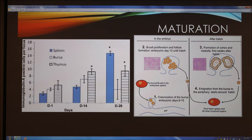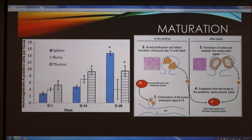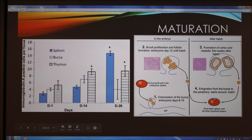The bursal follicles develop as the bursa of Fabricius develops, beginning early in the embryo. Pre-bursal B-cells from the spleen colonize the bursa between embryonic days 8 and 15, migrating from the spleen through the gut to the bursa located in the proctodeal region of the cloaca. The B-cells then begin increasing and follicles begin to form until hatching occurs. After hatching, the follicles develop a cortex and medulla, and differentiated B-cells migrate from the bursa to lymphoid organs such as the spleen or lymph nodes. The bursa grows most rapidly right after hatching and during embryonic development.